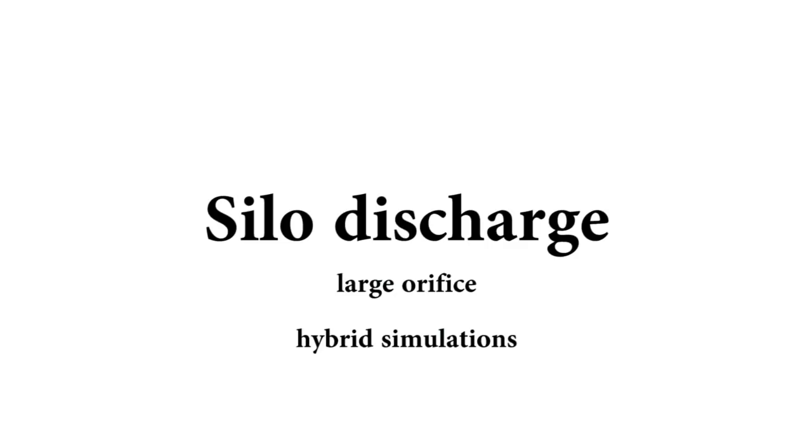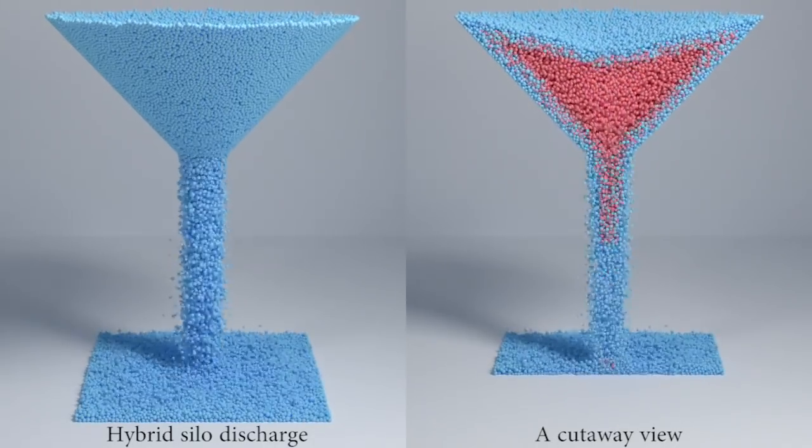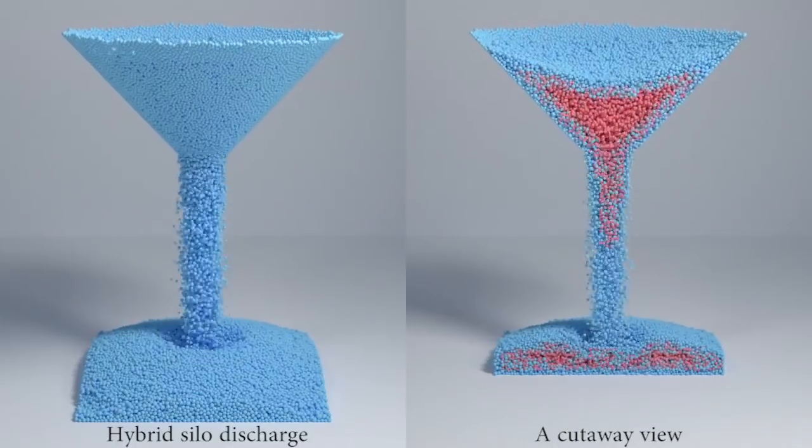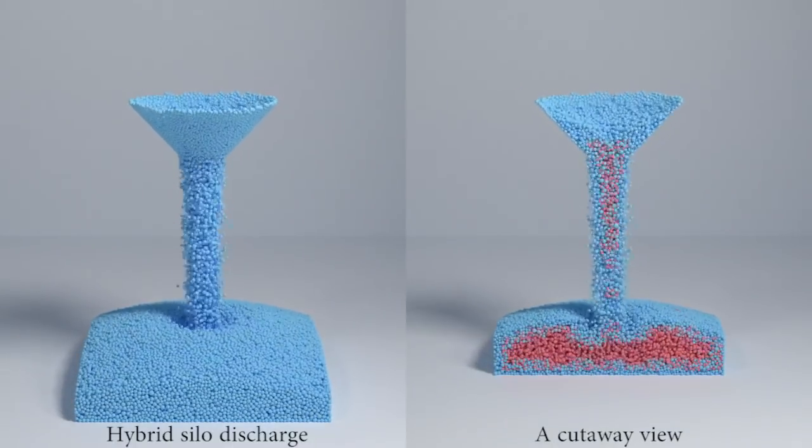With a larger orifice, we are able to reproduce a silo discharge. As grains exit the silo, our method automatically converts the continuum material to discrete material. As grains form a pile on the ground, our method automatically converts discrete grains to continuum material points.